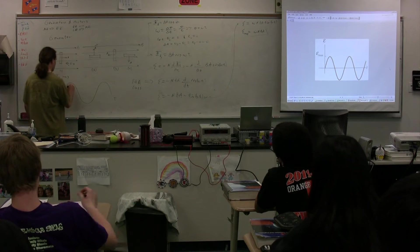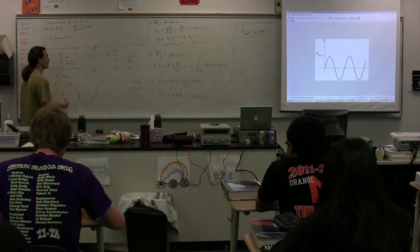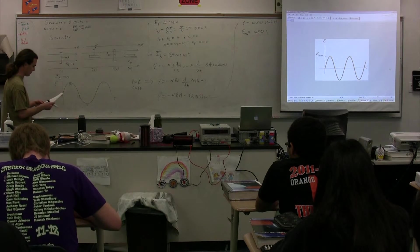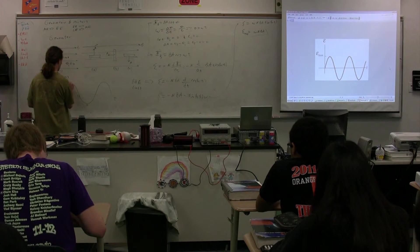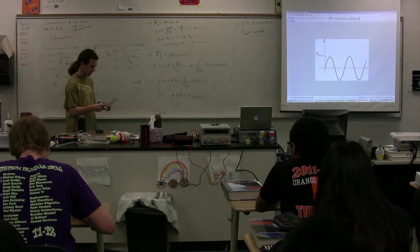This would be position 1, position 2, position 3, and position 4, when related to how we had it set up before. And this would be the location of the EMF maximum. That's your alternating current.